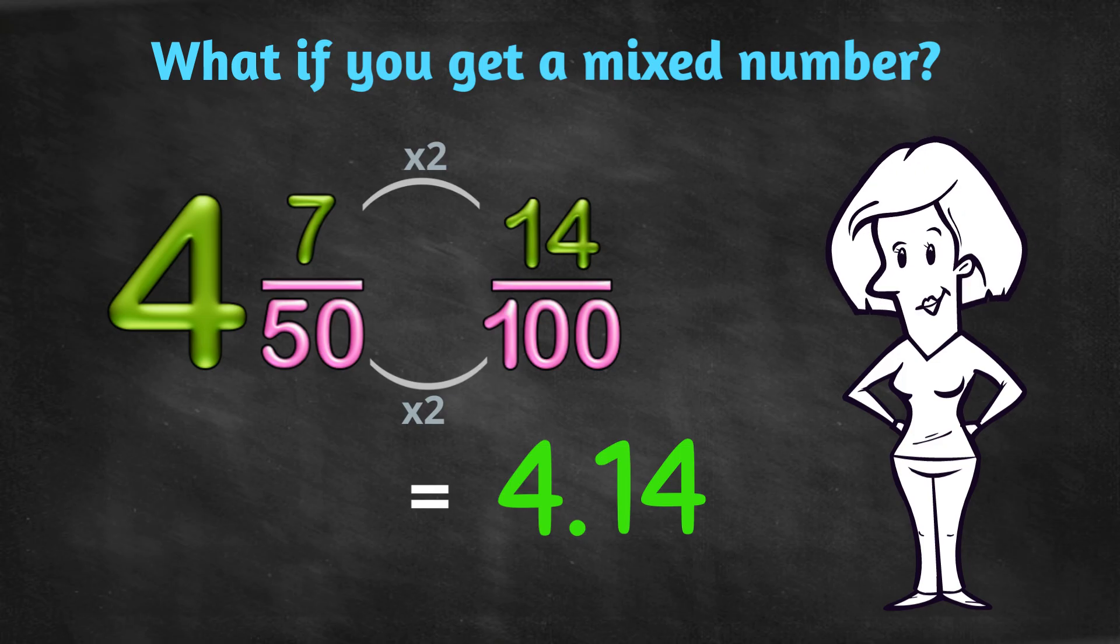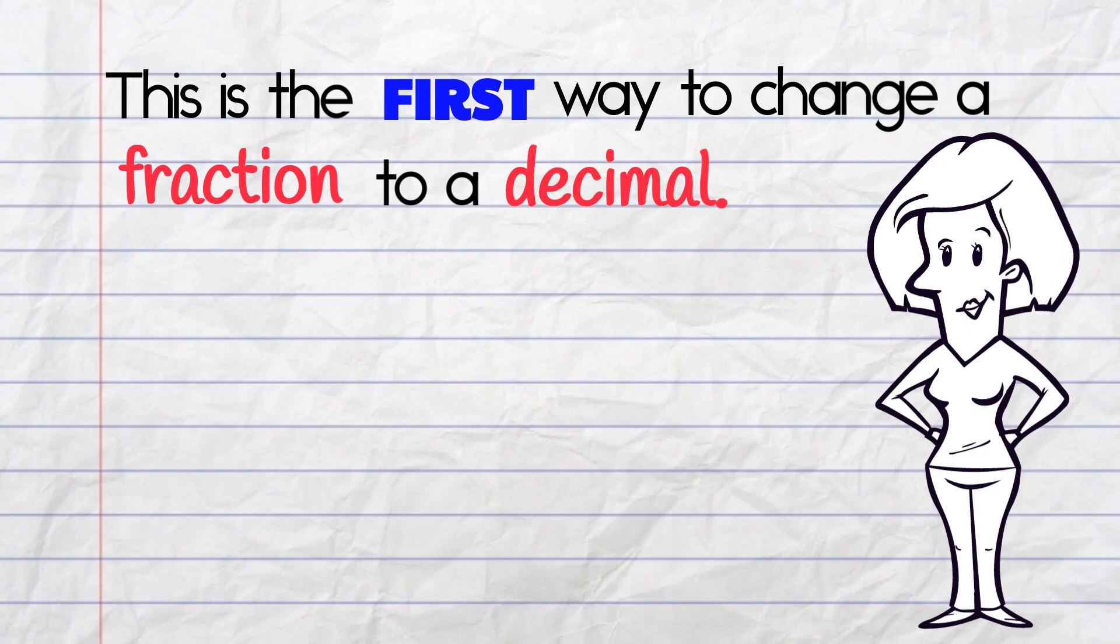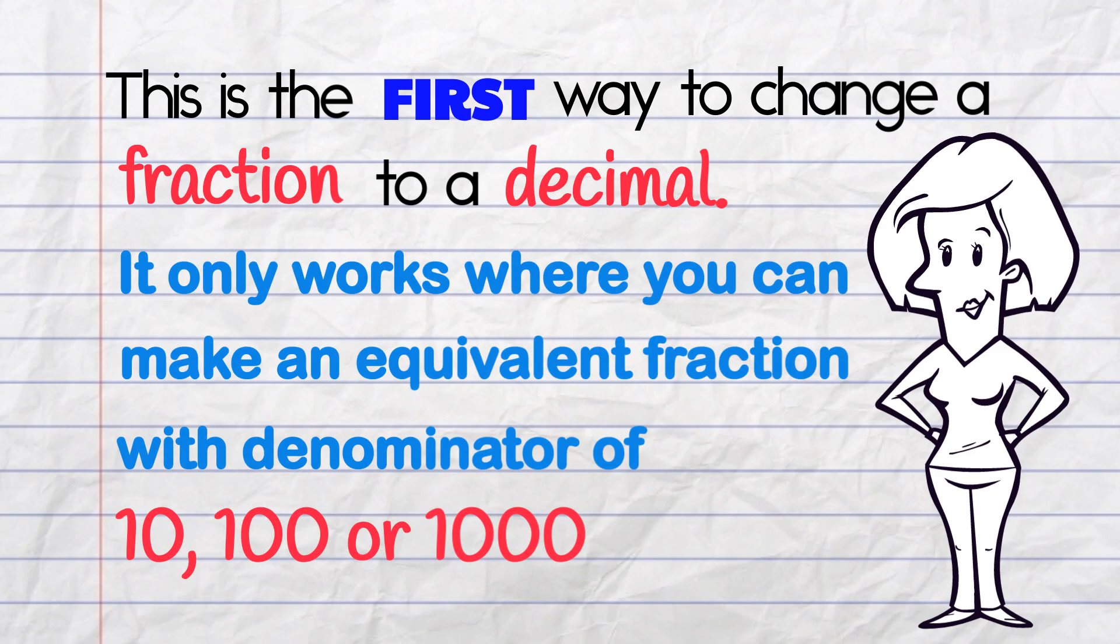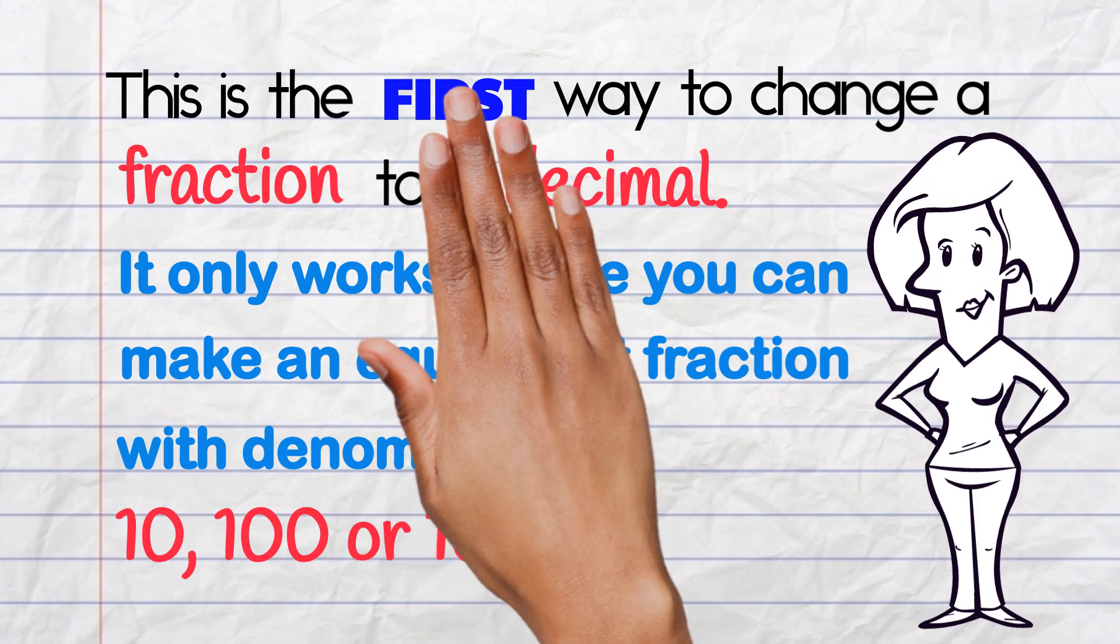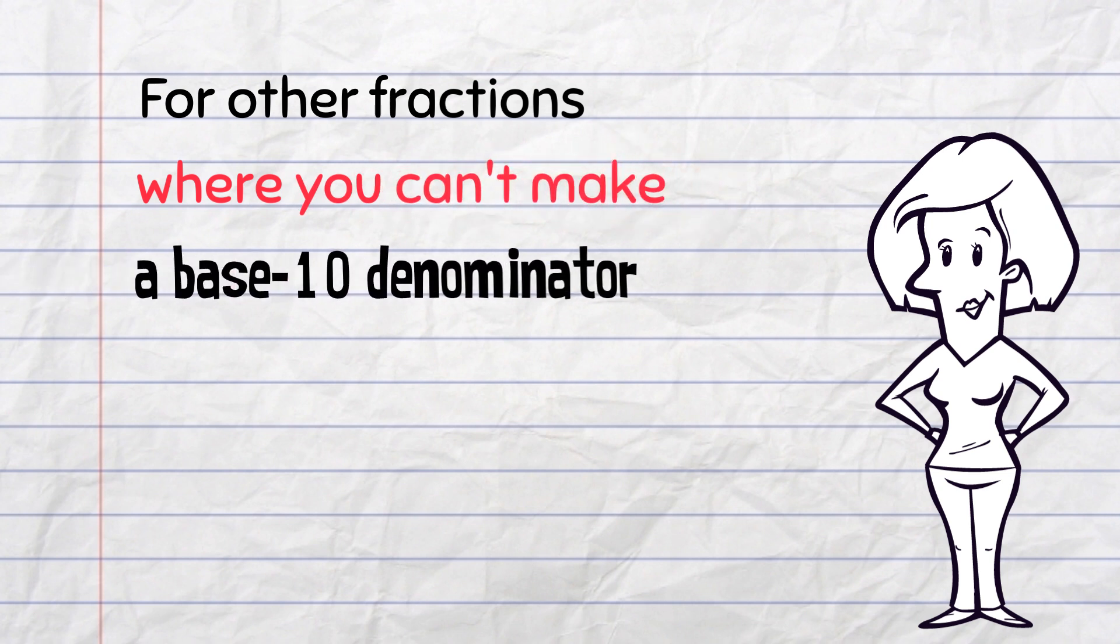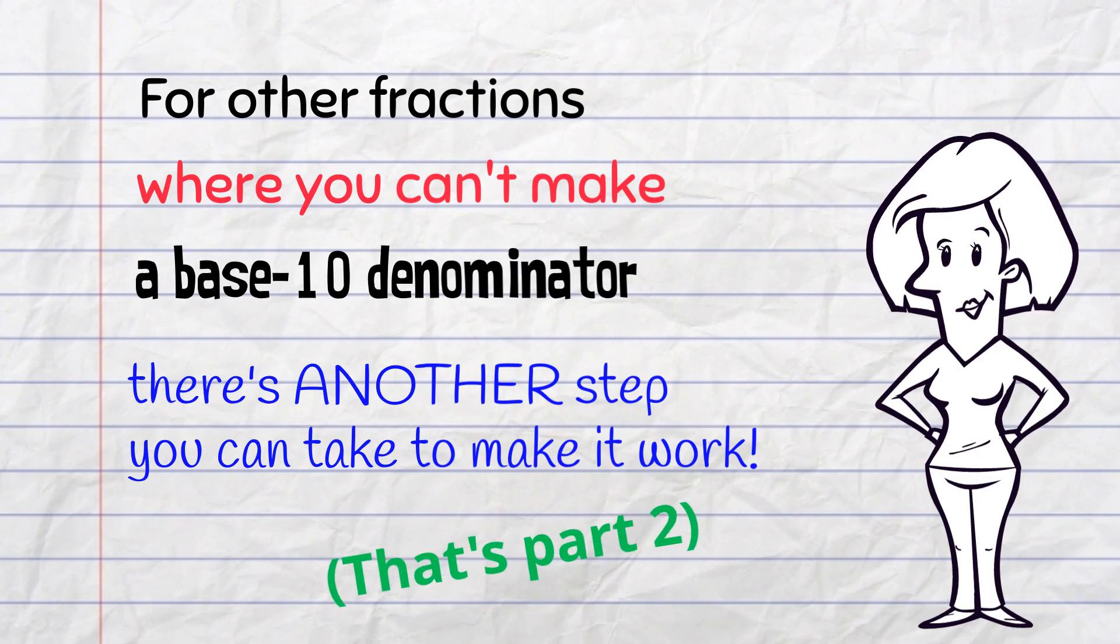And now it's time to try some for yourself! This is the first way to change a fraction into a decimal. It doesn't work for every fraction, only those where you can make an equivalent fraction with a friendly base-10 denominator. For other fractions where you can't make a friendly denominator, there's another step you can take to make it work. And that's Part 2 of Fractions to Decimals. See you next time!